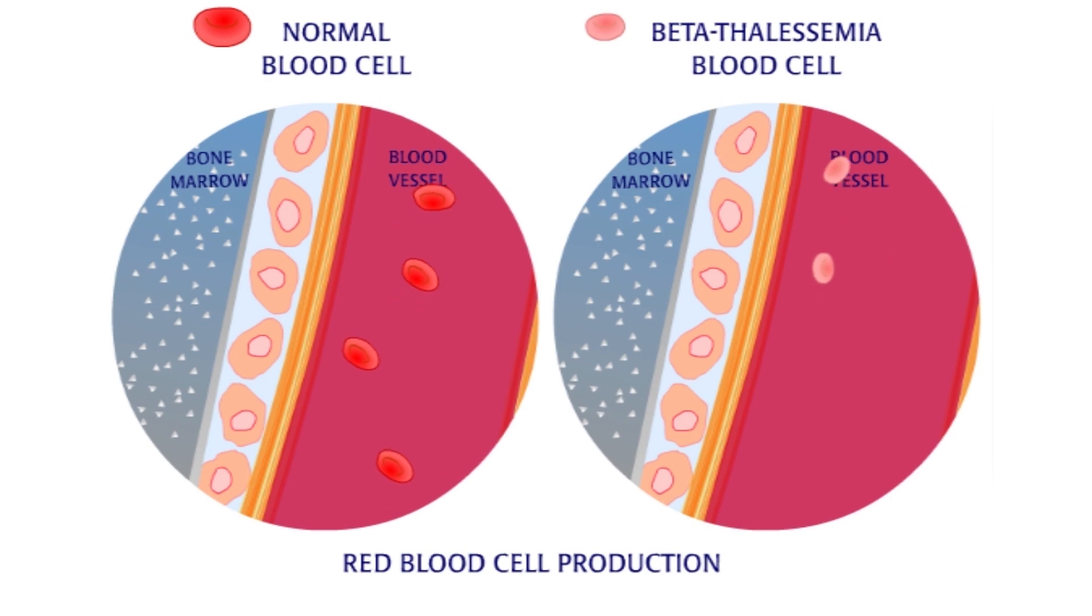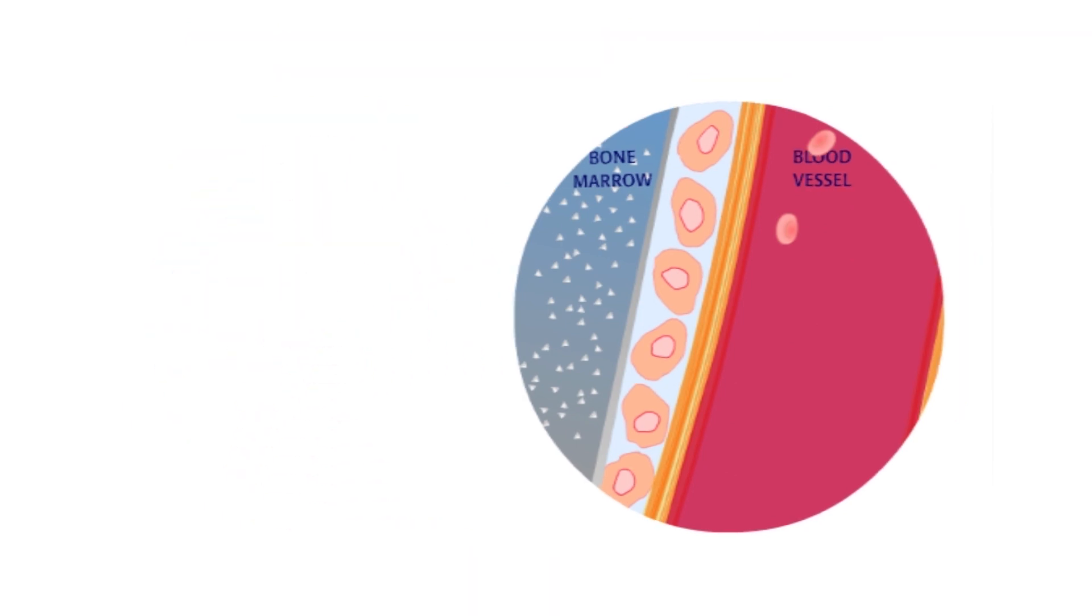In the surviving beta thalassemia blood cells, clumps of alpha chains continue to damage the cells. These mutant cells do not last as long as normal red blood cells.